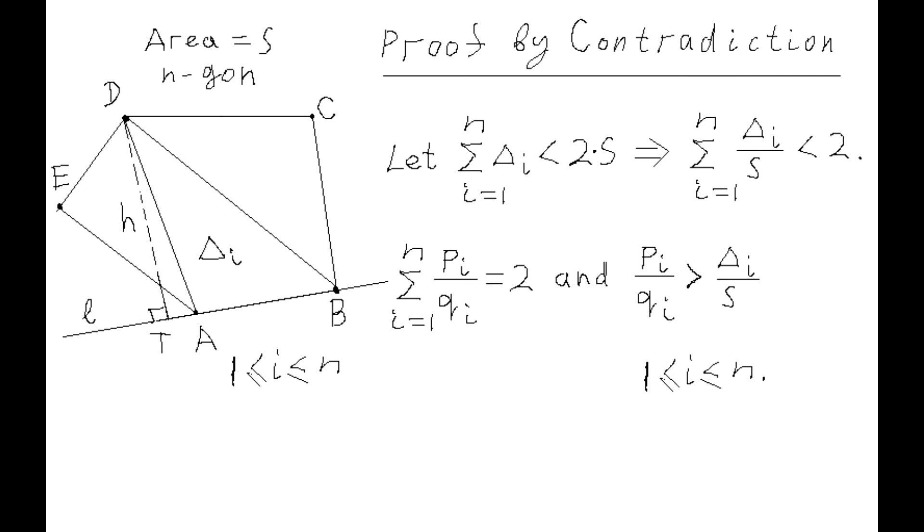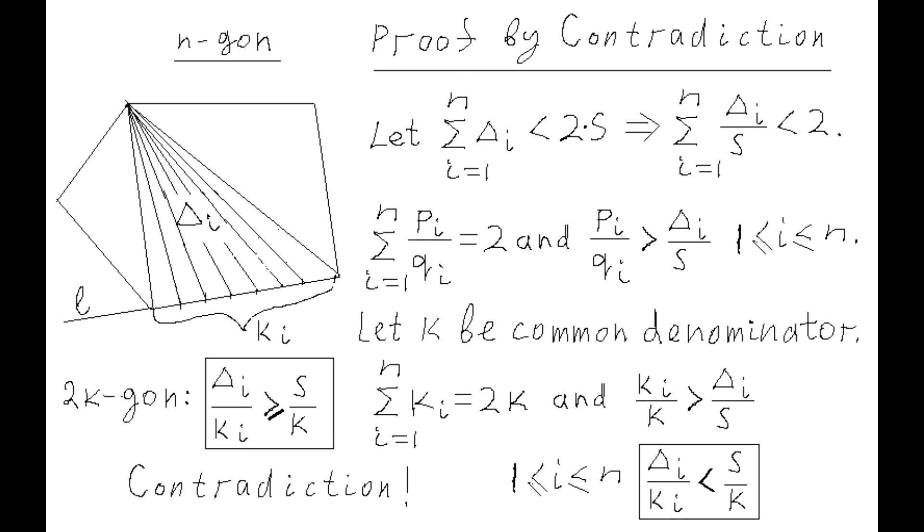Then there exists a set of such rational numbers, PI over QI, where I varies from 1 to N, such that their sum equals 2, where each of these rational numbers is strictly greater than the corresponding ratio of the area of super triangle I over area S. So, we have N fractions, PI over QI, where all PI and QI are positive integer numbers, such that the sum of these rational numbers is 2.